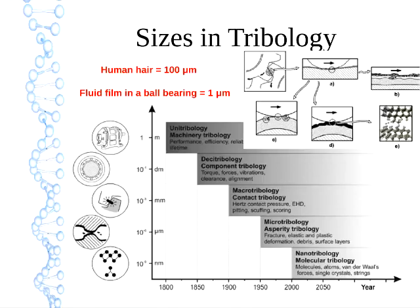To give you a frame of reference on the size scales important in tribology: a human hair has a diameter of about 100 microns, and the fluid film in a ball bearing is about one micron thick. Looking at a gear, you can zoom in from the meshing gear teeth to the lubricant film, and then further still down to the level of individual atoms.